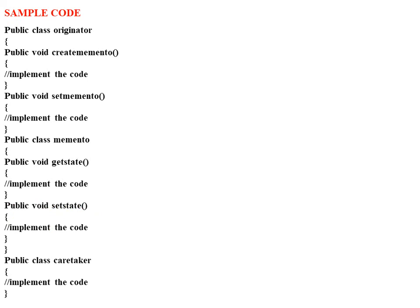This is the sample code. The Originator is a public class with methods: create memento, set memento. The Memento class has state, get state, and operation methods. These form the sample code for the Memento pattern.